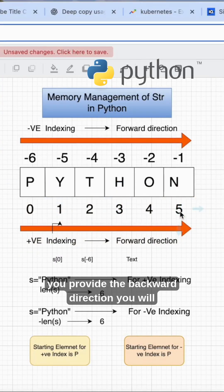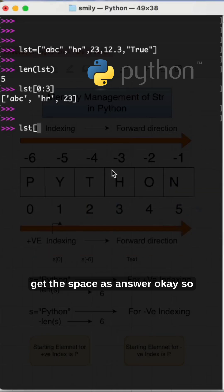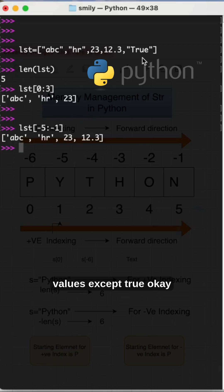So I'm trying to get minus 0 1 2 3 4, minus 5 colon minus 1. What is the value you will get? All the values except true. So these are the slicing operations in Python. That is more flexibility when you go with the data science level. This is a more advanced topic.